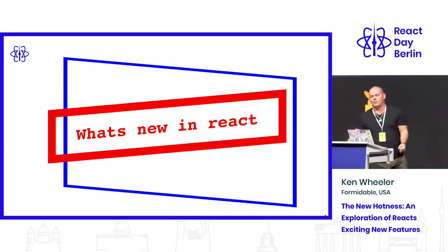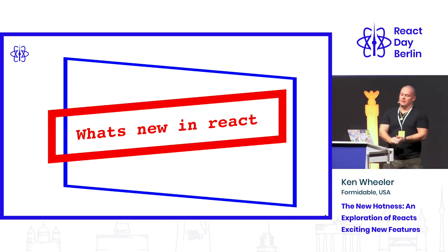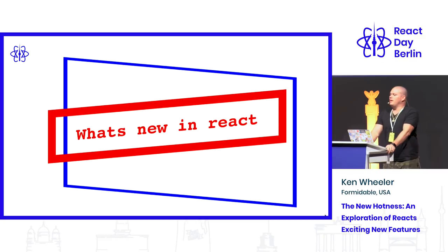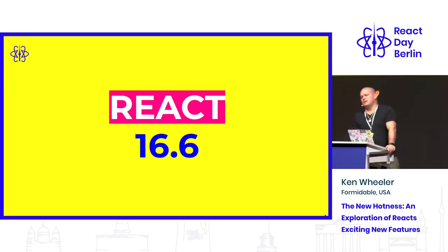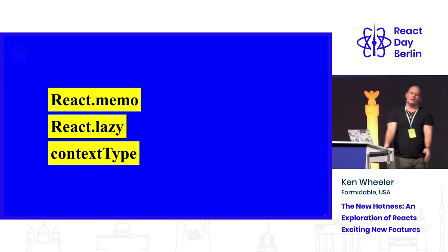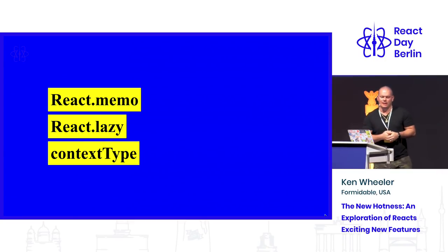It's a super exciting time for React. For a while I was like, you know, it's good, it's done — and then here they go and just release some crazy new things that are literally changing everything, backwards compatibly of course. I'm going to run through a lot of that today. Starting with 16.6 — this is what your job will let you install. Three really good things came out: React.memo, React.lazy, and contextType. No hooks, but they're super dope.